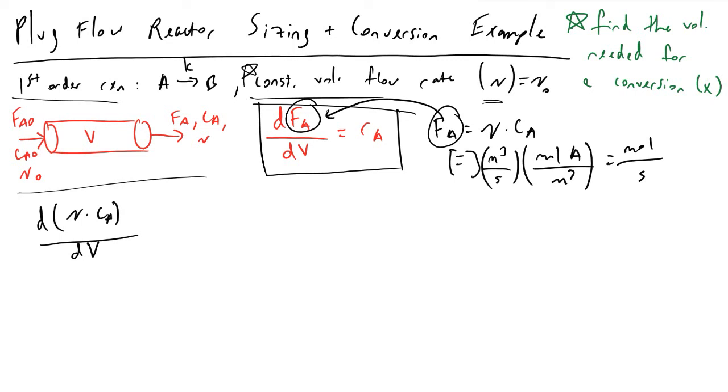Plugging in these values, what we find is that dFA is really equal to d times the volumetric flow rate times the concentration of A dV, and this is equal to rA. And rA, because it is a first order reaction, is equivalent to minus k times CA. I have a minus sign because we're consuming A in this reactor. Because we also said that we have a constant volumetric flow rate in our reactor, we can pretty easily just pull out the volumetric flow rate term here.